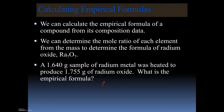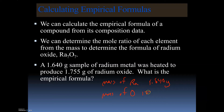First, we need to figure out the mass of radium and the mass of oxygen. The mass of radium is easy — it's 1.640 grams. The mass of oxygen is found by taking the mass after the reaction and subtracting the initial mass, giving us 0.115 grams.